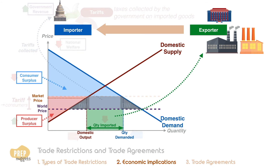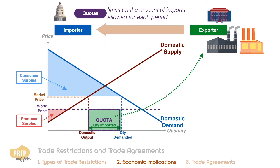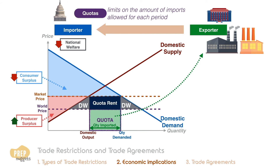A quota has the same effect as a tariff. When the amount of imports is limited to a level lower than domestic demand, the domestic price increases above the world price. This has the exact same effect as tariffs in lowering consumer surplus, increasing producer surplus, and reducing national welfare. The only difference is where this portion, known as the quota rent, goes.